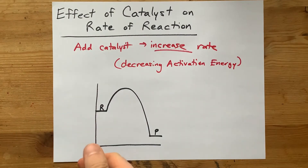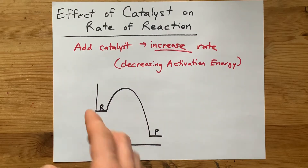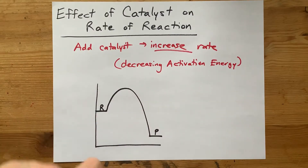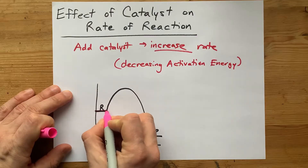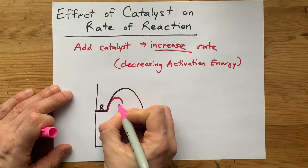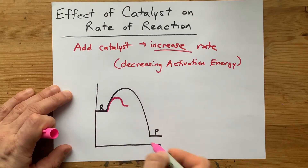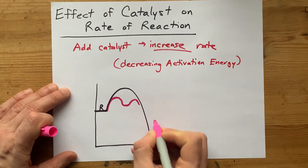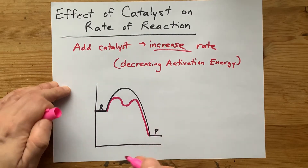A catalyst provides a new pathway. What I mean is that the reactant isn't just doing whatever it usually does to create the product — there are a couple of extra steps being added. You start with the same reactants, but maybe they'll react with the catalyst, and that'll be a separate reaction, giving you some new chemical that wasn't present before. Then that new chemical does something else, and at the end of the whole thing, you end up in the same place with the same products.